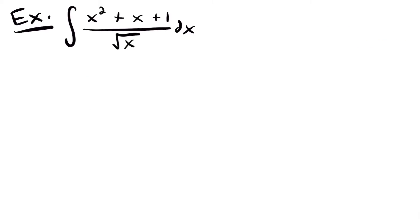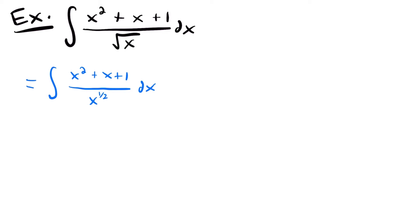Here's a tricky example. We have the integral of x squared plus x plus 1 divided by the square root of x dx. The first thing we want to do is change the square root of x to x to the 1 half power. So this is the integral of x squared plus x plus 1 divided by x to the 1 half power dx. Next, we split this up into three different fractions — each term divided by x to the 1 half power — giving us x squared over x to the 1 half, plus x over x to the 1 half, plus 1 over x to the 1 half, all times dx.